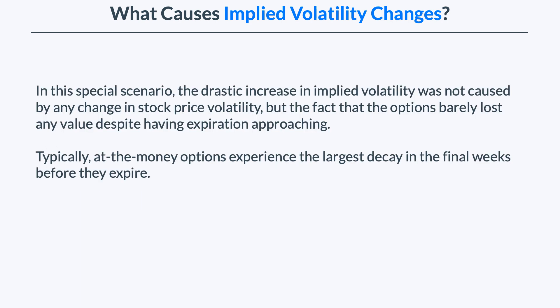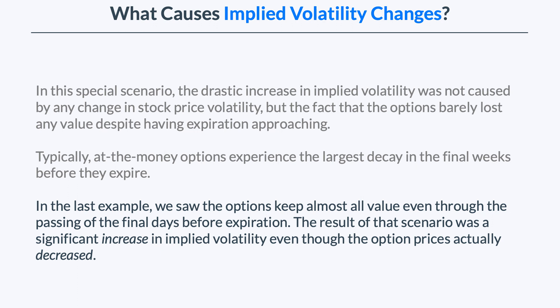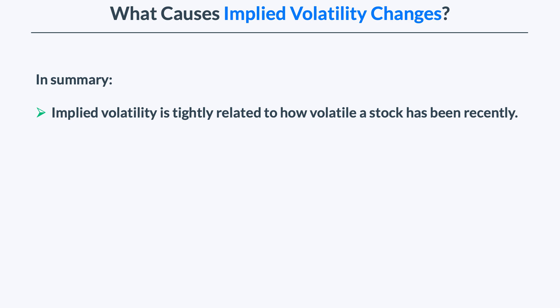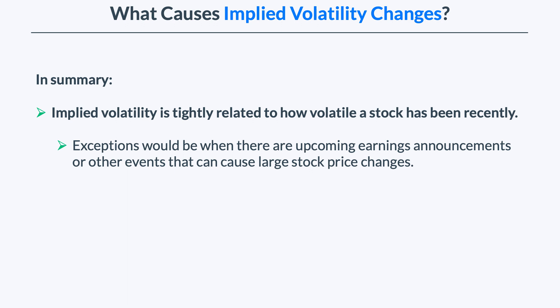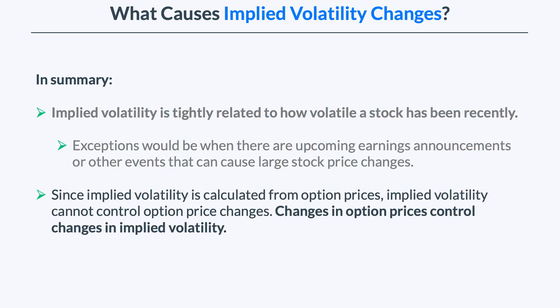In this special scenario, the drastic increase in implied volatility was not caused by any change in stock price volatility, but by the fact that the options barely lost any value despite expiration rapidly approaching. Typically, at-the-money options experience the largest decay in the final weeks and days before expiration. In summary, implied volatility is tightly related to how volatile a stock has been recently. Exceptions include upcoming earnings announcements or other events that can cause large stock price changes. Since implied volatility is calculated from option prices, it cannot control option price changes — changes in option prices control changes in implied volatility. Every time you think of implied volatility, think of option prices, because that's exactly what implied volatility is.